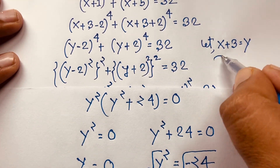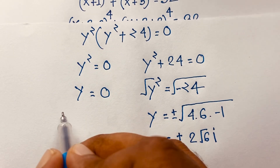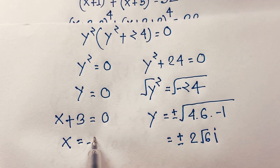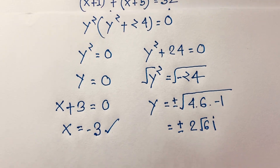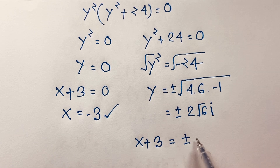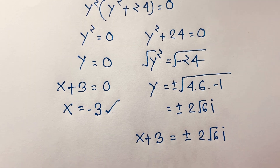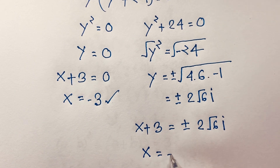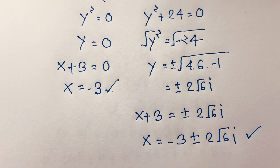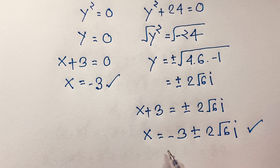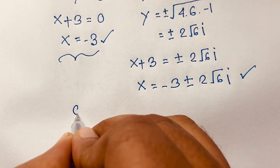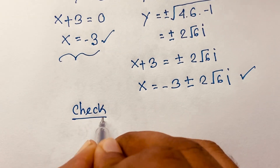Recall that y = x+3. For y = 0: x+3 = 0, so x = −3. This is our real solution. For y = ±2√6·i: x+3 = ±2√6·i, so x = −3 ± 2√6·i. This is a complex number solution, not a real solution. Therefore x = −3 is our real answer.